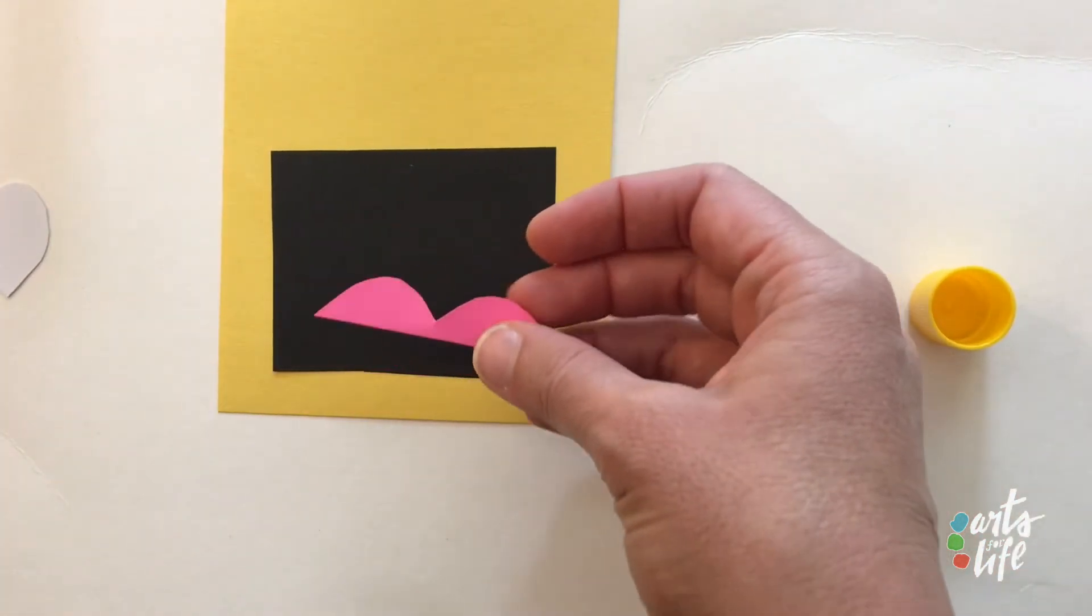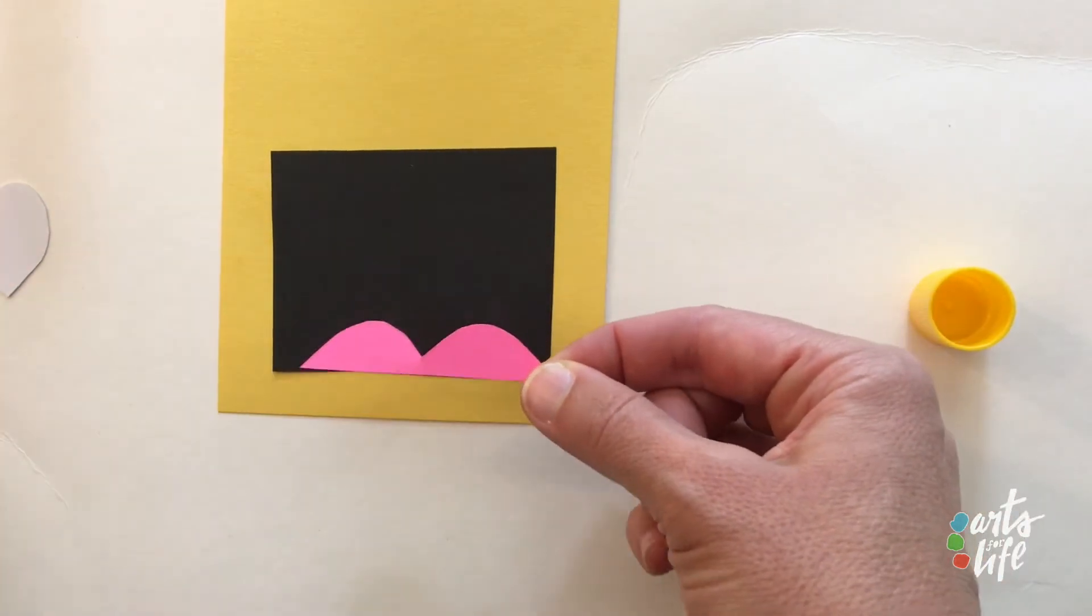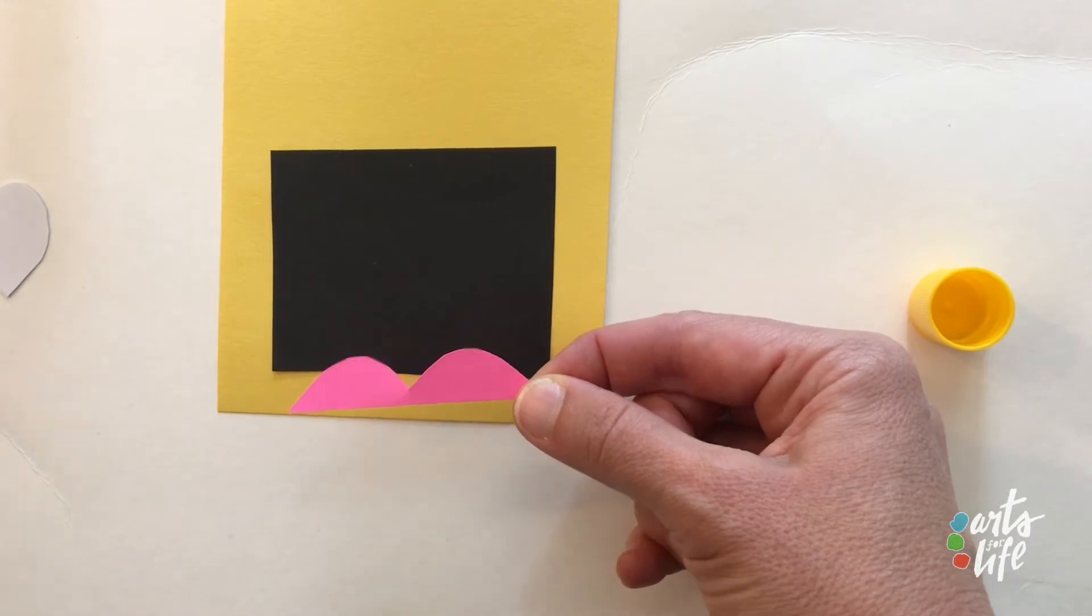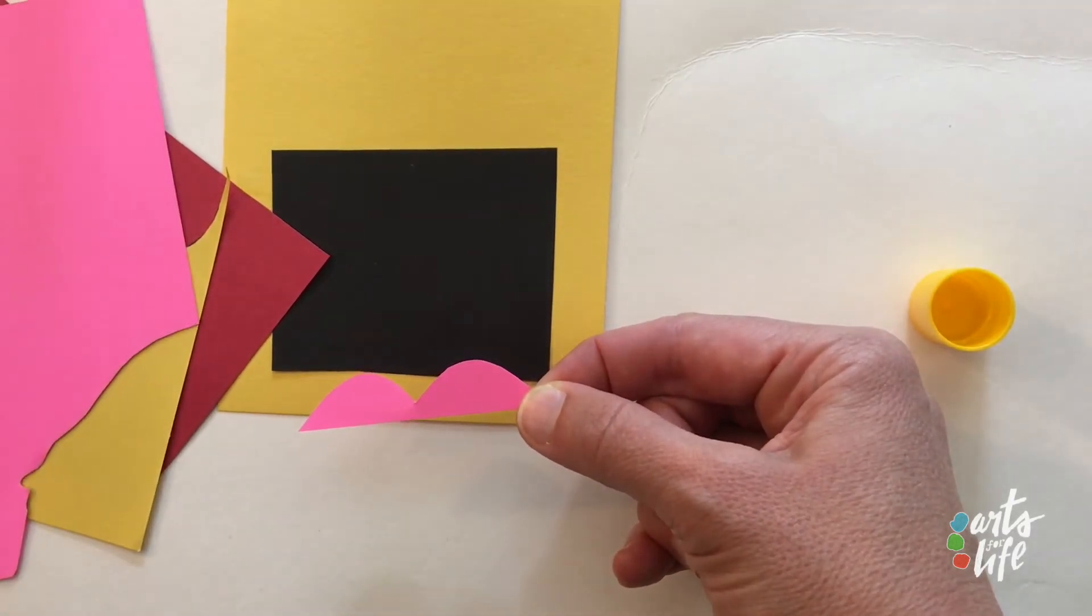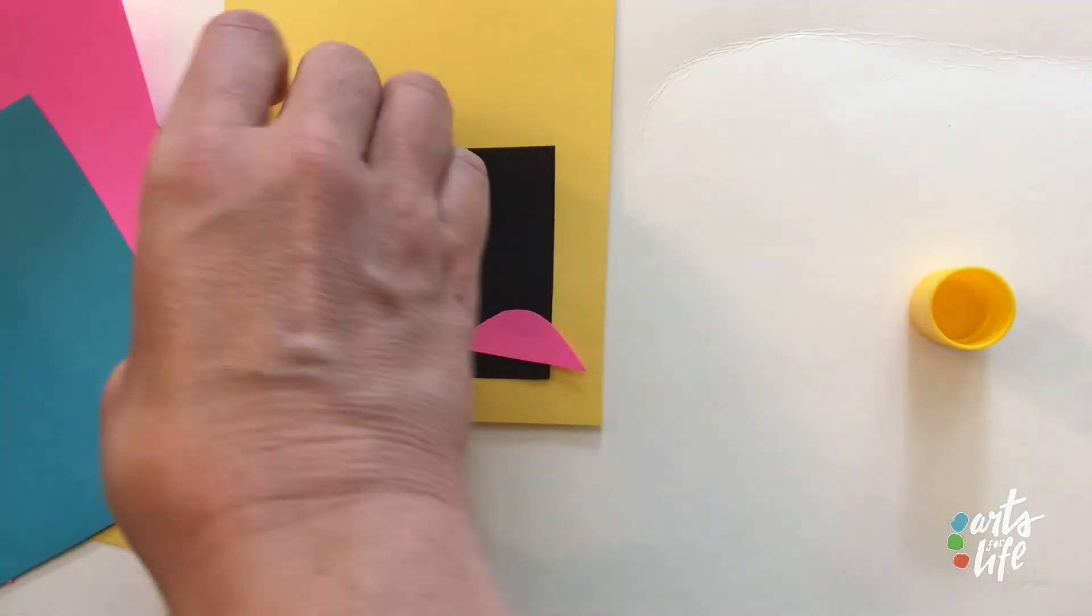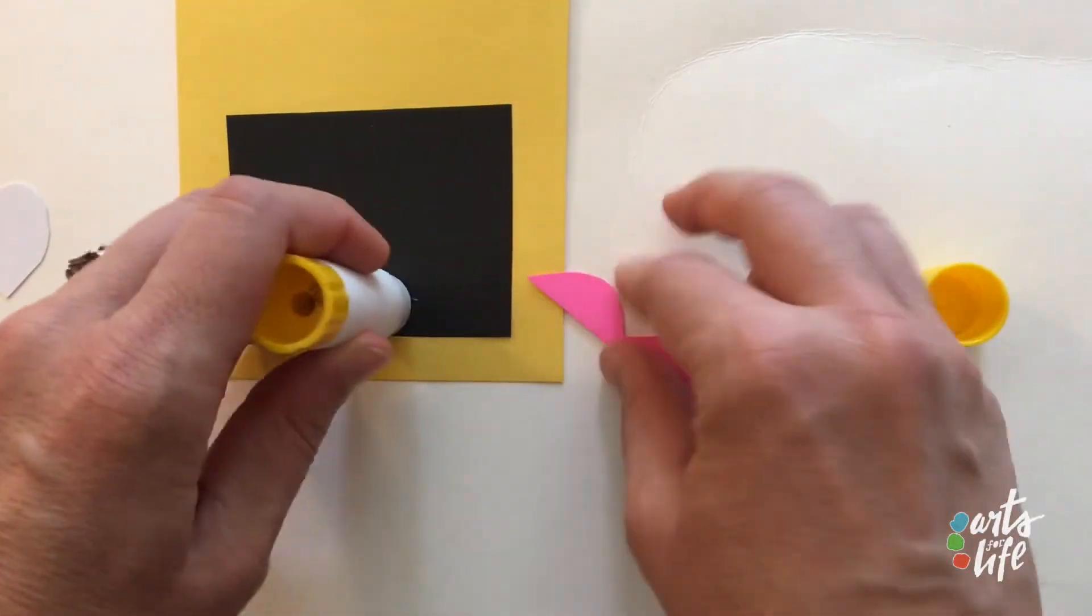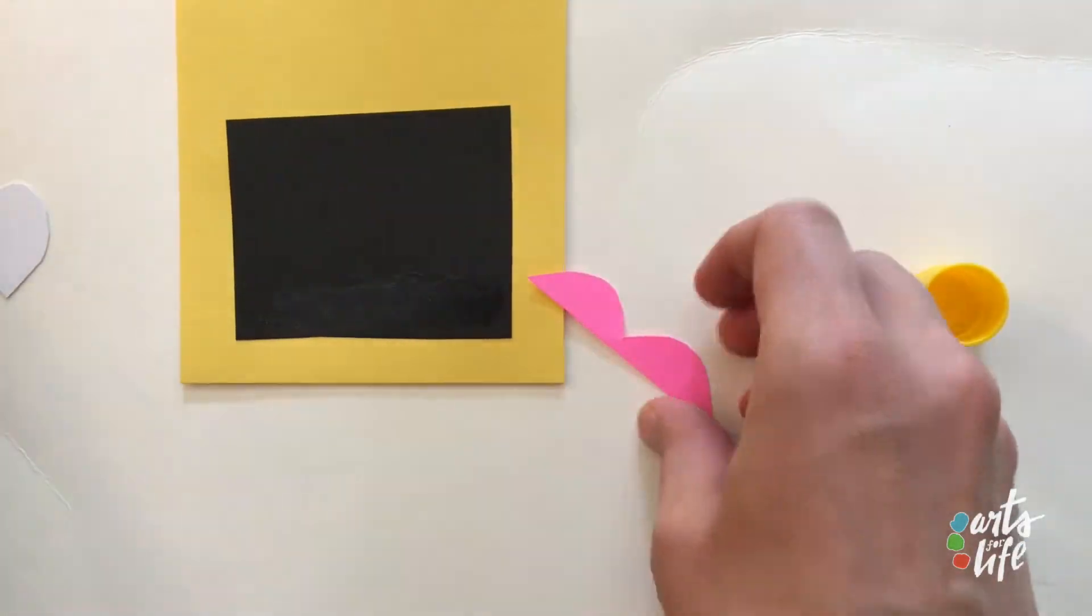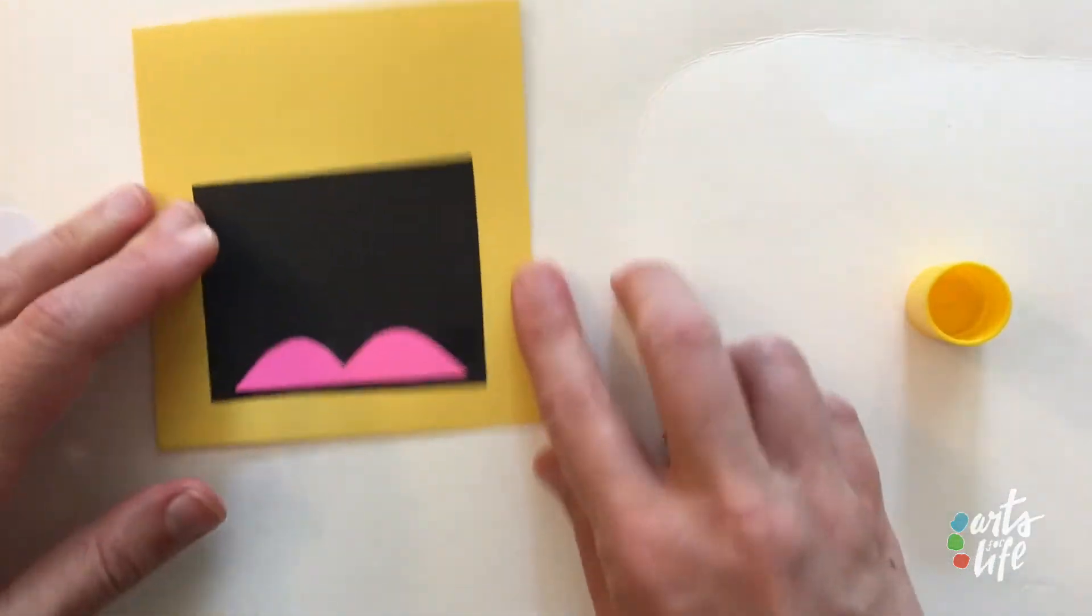And then you can grab your tongue if you have it pre-cut. If not, just grab any color you could use. You could use red or yellow, pink, blue, just anything you could think of. All right. Glue the tongue down. It already looks like it's kind of yelling.